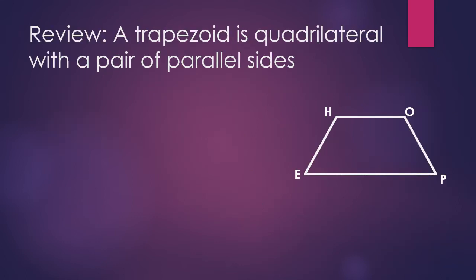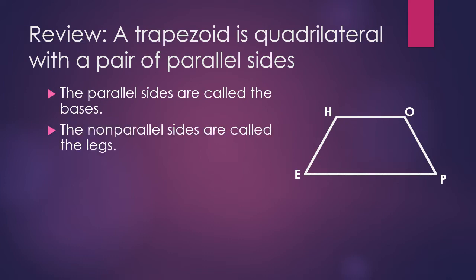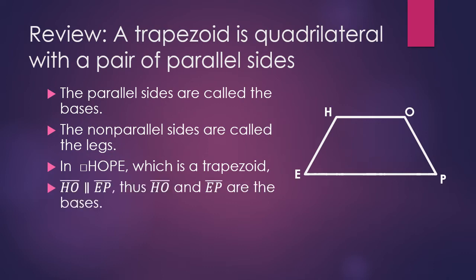We move to the trapezoid. A trapezoid is a quadrilateral with a pair of parallel sides. The parallel sides are called the bases, and the non-parallel sides are called the legs. In quadrilateral HOPE, HO is parallel to EP, so HO and EP are the bases, and EH and OP are the legs.